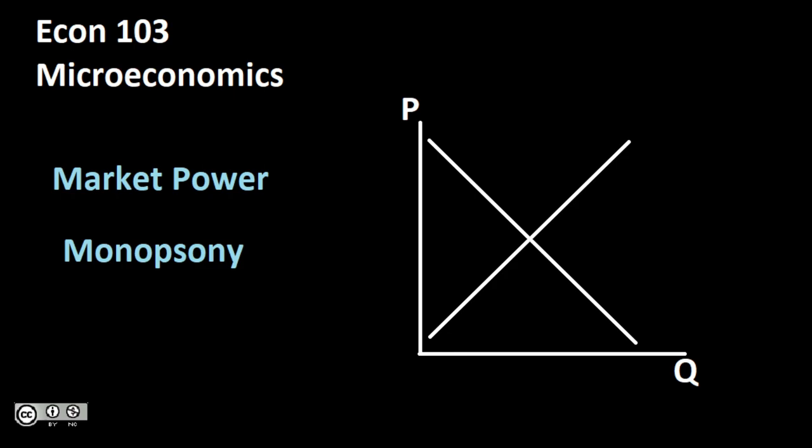So we had lots and lots of people wanting to buy the good, but for one reason or another, potentially due to large barriers preventing other entry, we only had one seller of the good or service. In this case here, we have the opposite. We have lots of sellers, lots of people wanting to sell their good, but we have one big buyer — one firm or individual who dominates the market and is the only one who buys this good or service.